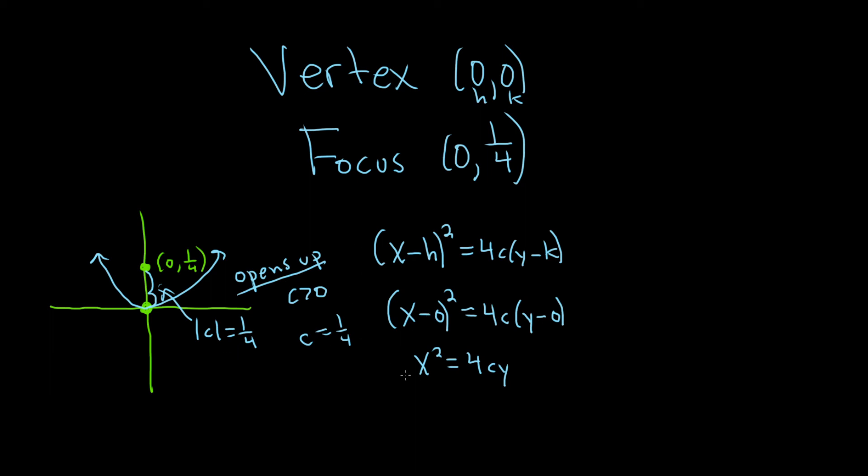So now we just take the c and we plug it into our equation. We have x² = 4 times c, which is 1/4, and it's being multiplied by y. So these cancel, so we end up with x² = y. And that would be the equation of our parabola.